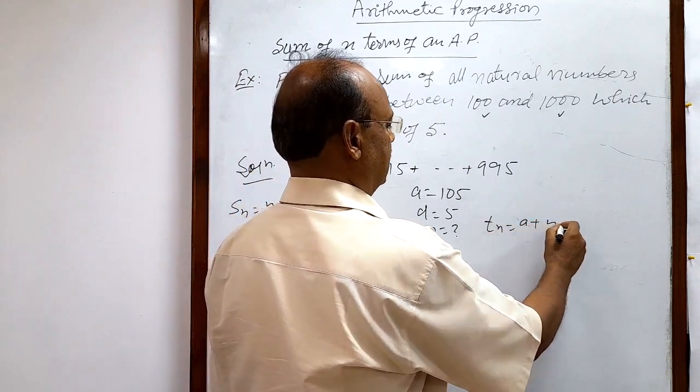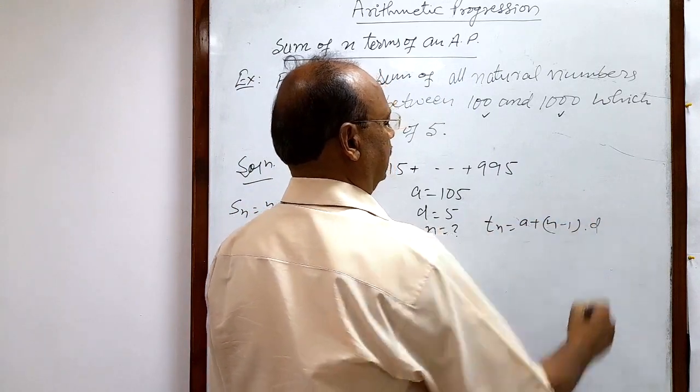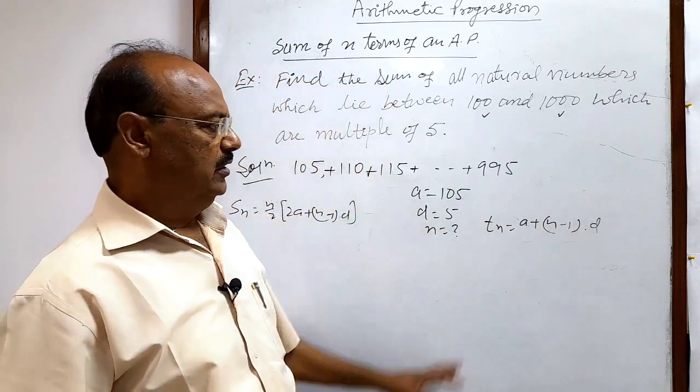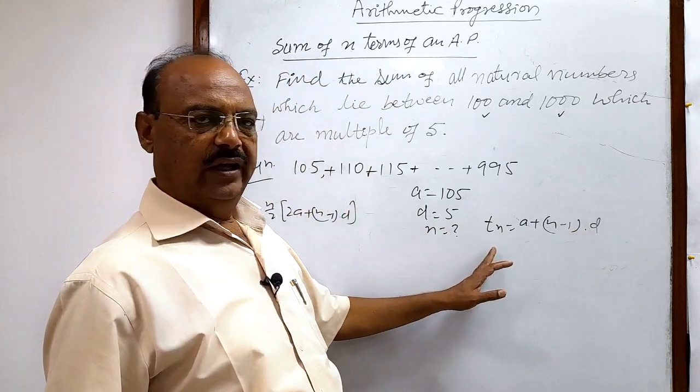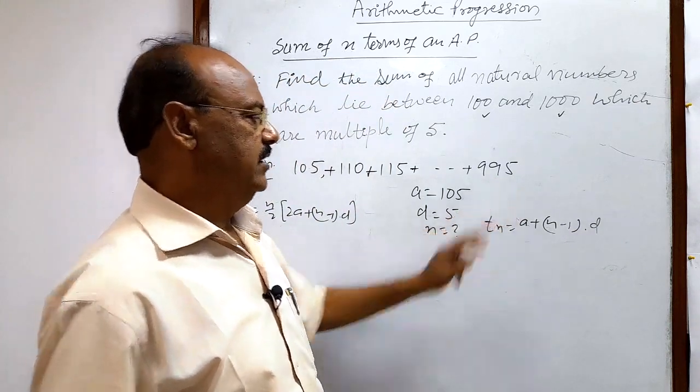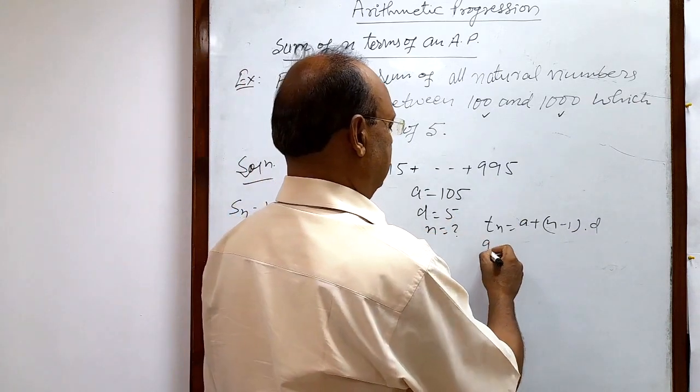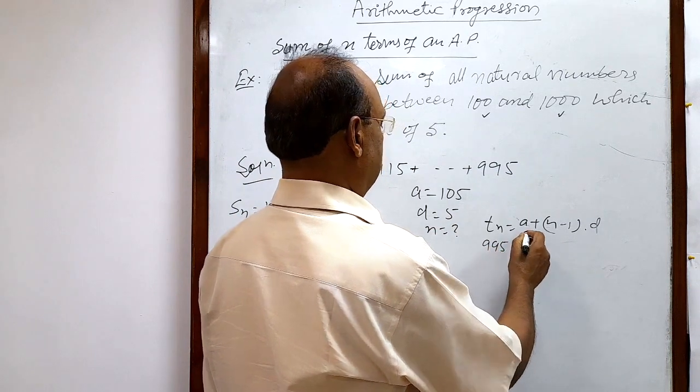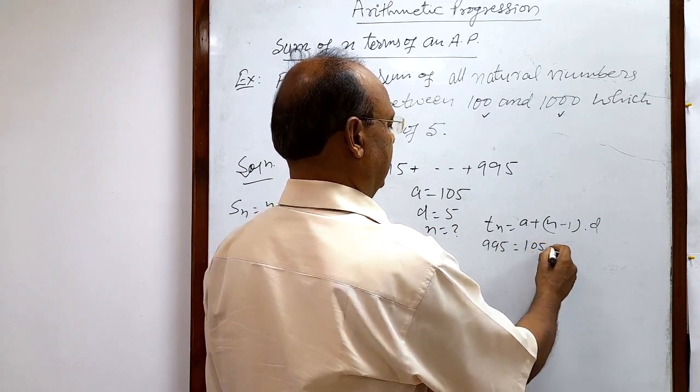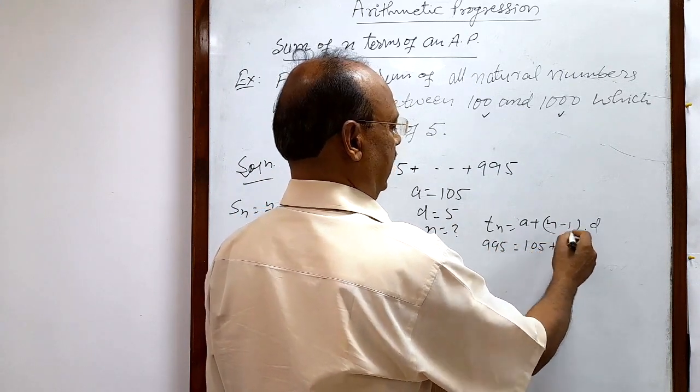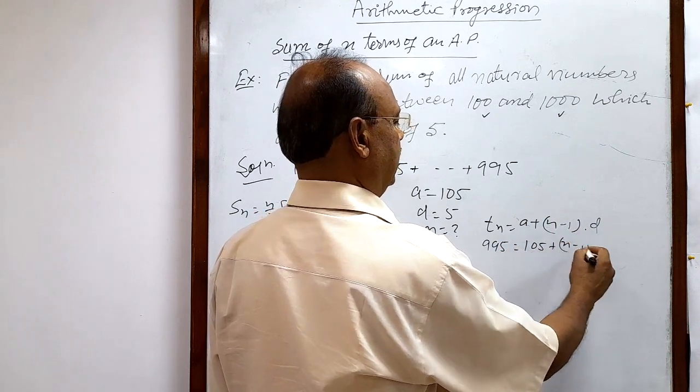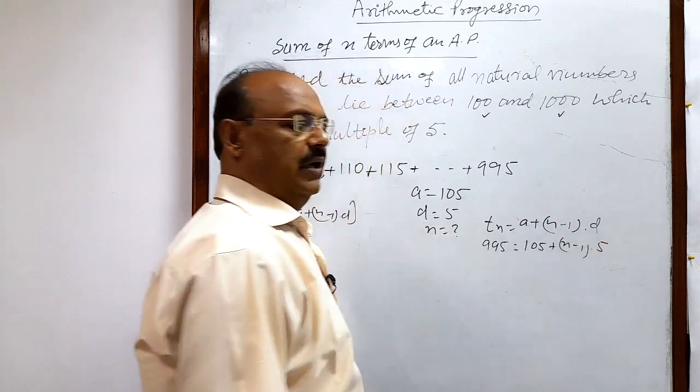Tn is equal to a plus (n minus 1) times d. Tn means nth term. The nth term we will consider is 995. So 995 is equal to a, which is 105, plus (n minus 1) times d. Common difference is 5.